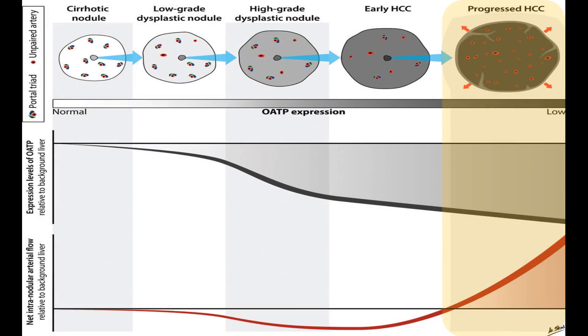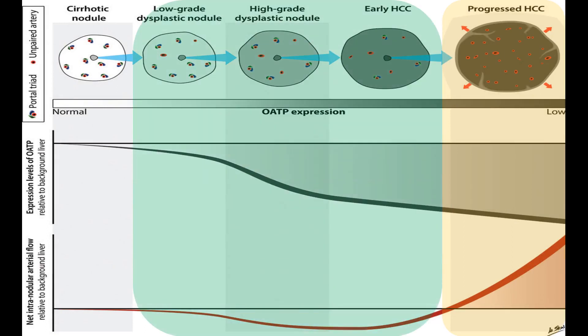However, the present article focuses on a different group of nodules: high-grade dysplastic nodules, which are pre-malignant, and early HCC, which is malignant. These nodules show decreased OATP and hypointensity in the hepatobiliary phase, but do not show arterial phase hyperenhancement. The question is: is there any way we can identify these nodules, and what is their distribution among all HBP hypointense nodules?